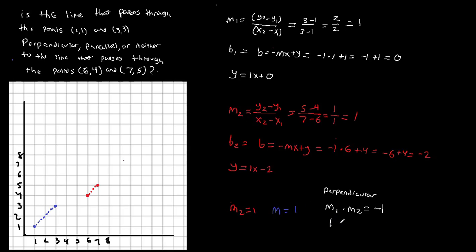Does 1 times 1 equal negative 1? Well, no, it does not. 1 times 1 is equal to positive 1, not negative 1. So, because this equality doesn't work, 1 is not equal to negative 1, then these two lines can't be perpendicular. I'm going to use a different color here. These two lines can't be perpendicular, because if they were perpendicular, then this would have to be true. So, we know the lines aren't perpendicular.